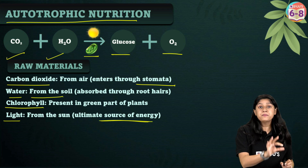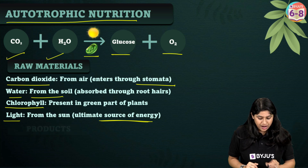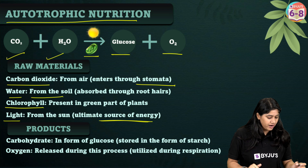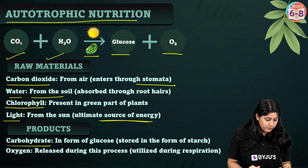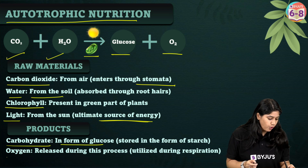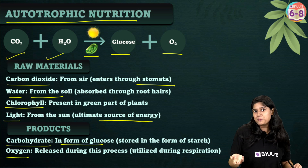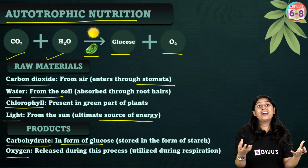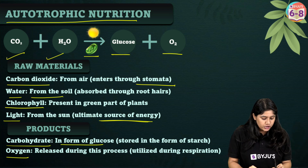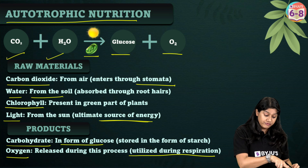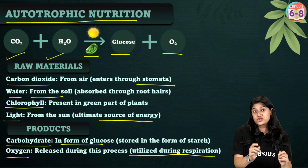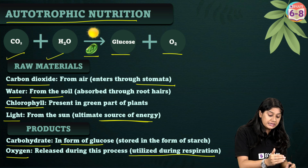The products of photosynthesis are carbohydrates in the form of glucose, stored as starch in the plants, and oxygen released during this process. This oxygen is utilized by us and other organisms in respiration, and plants also use this oxygen in respiration.